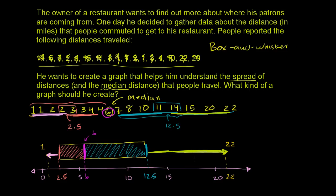One thing to note: the method I used finds the median, removes it from both halves, then finds the median of each half separately. This is the more typical and mainstream method for box and whisker plots — the way most calculators will do it. However, some people include the median in both halves when calculating the quartiles, so just be aware that alternative exists.